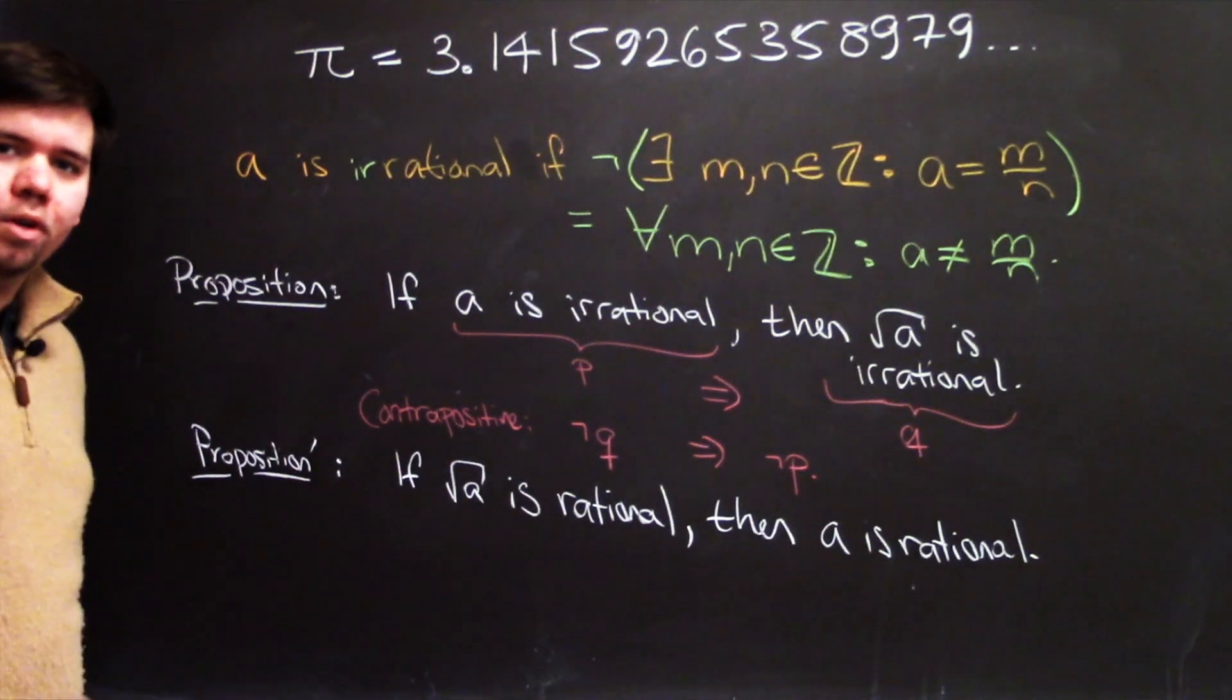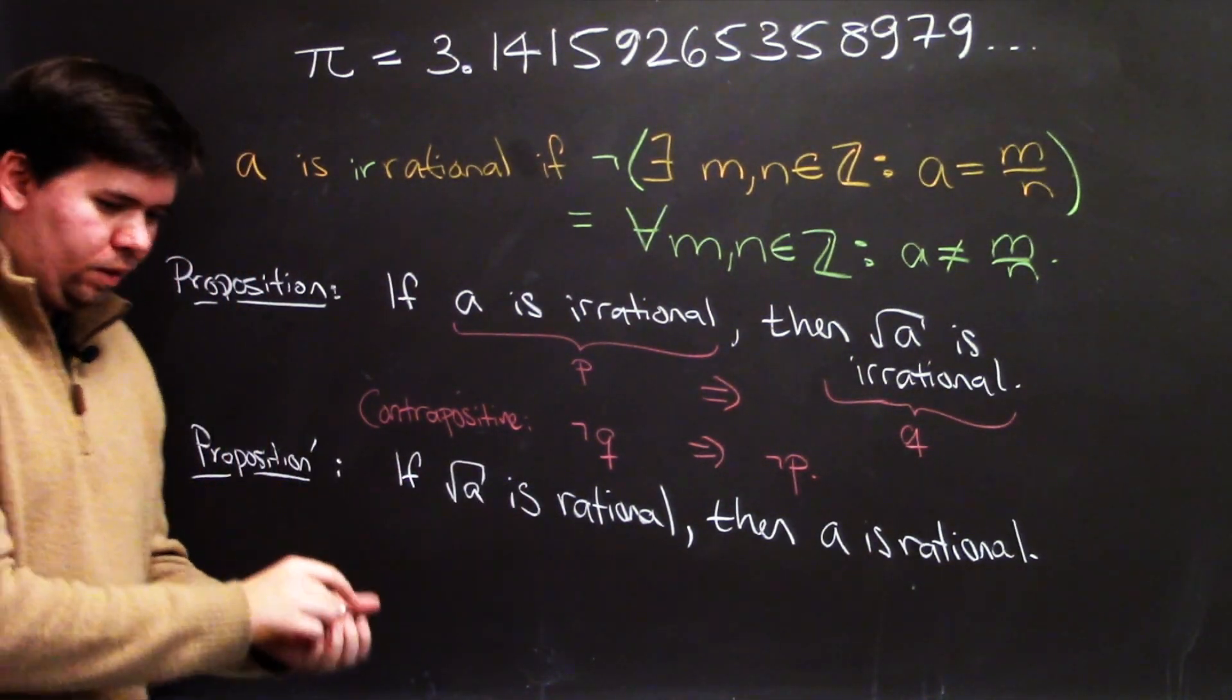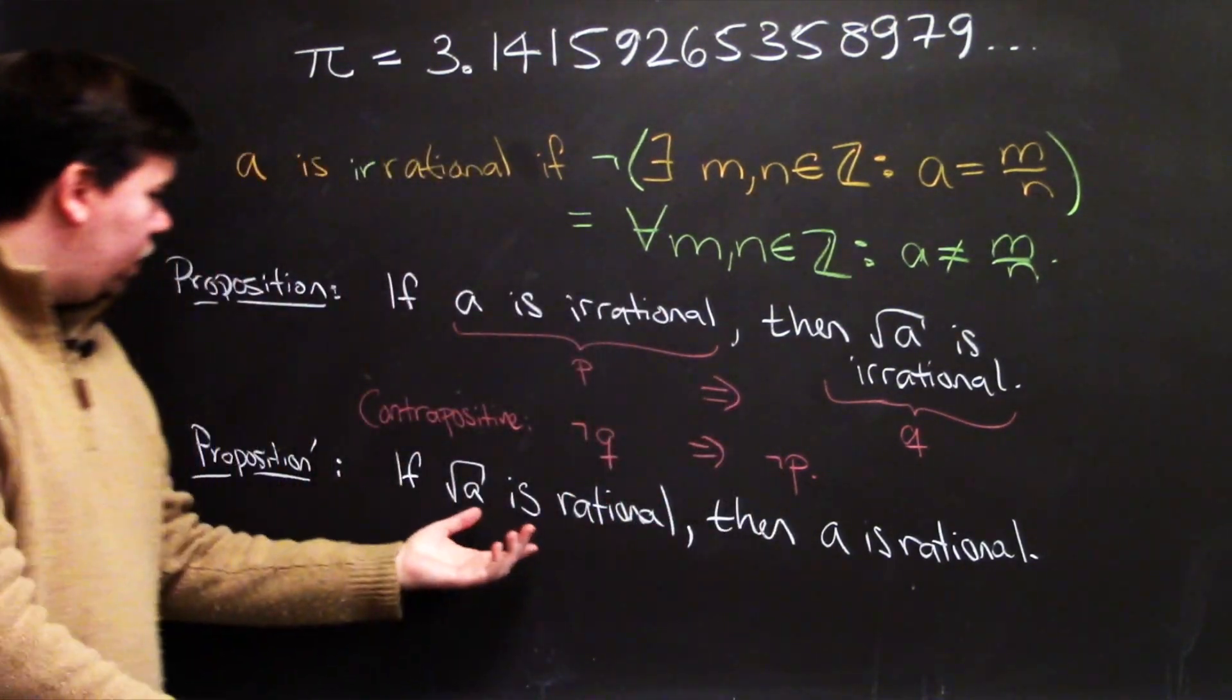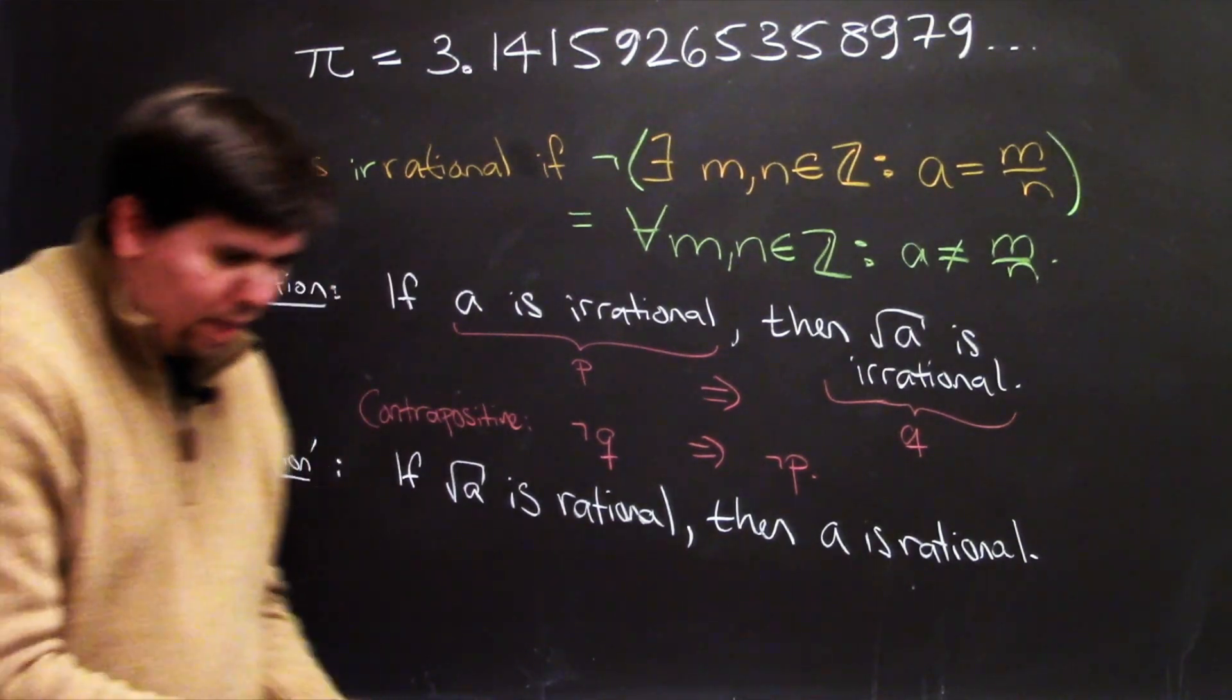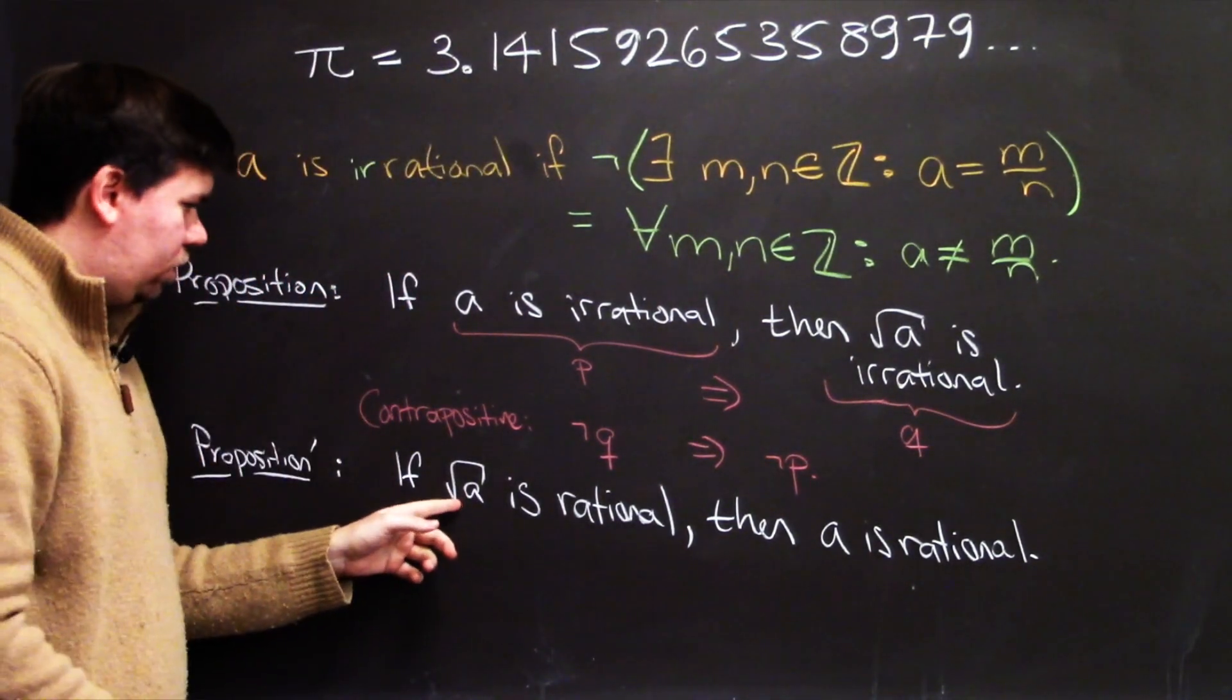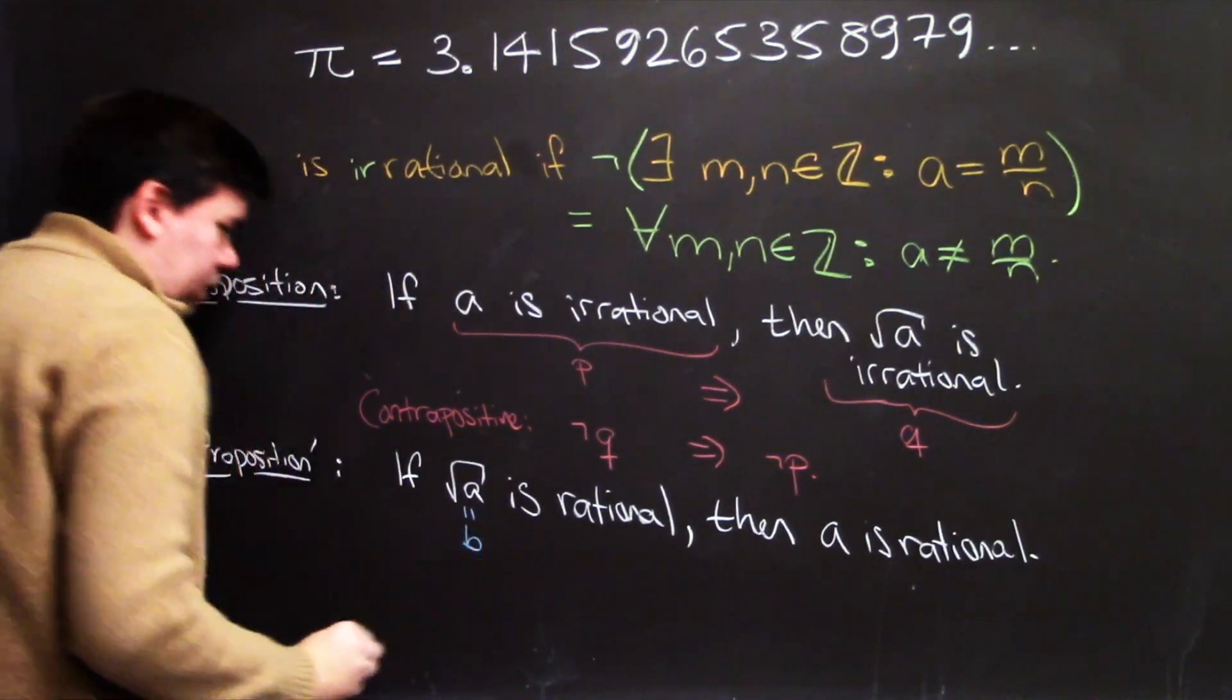So this is what we need to prove. But look, this is now something we can work with. So how can we get some traction on this? Well look, what does it mean for the square root of a to be rational? Well, let me make one last edit. Instead of calling this the square root of a, that seems a little bit messy, I'm going to call this just b.